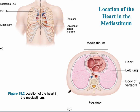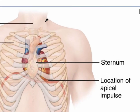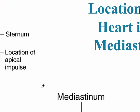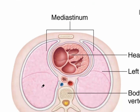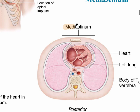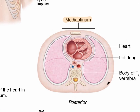This diagram shows the heart located in the mediastinum region between the two lungs. A transverse section shows the mediastinum with different structures: the esophagus, the vena cava shown in blue, and the aorta shown in red.